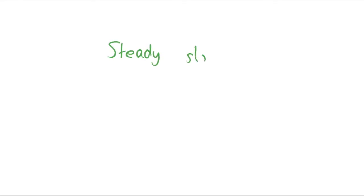In the last video we derived a few equations regarding the Solow growth model. In this video I'm going to graphically show how we converge to steady state and then also discuss why we converge to steady state using graphs. In a future video I will give an example and derive this algebraically, but this is just good for intuition to show it graphically.